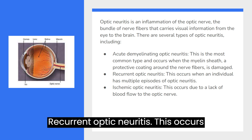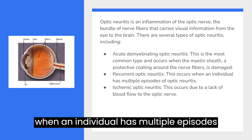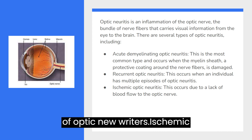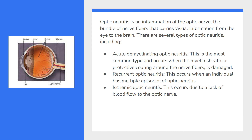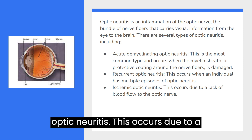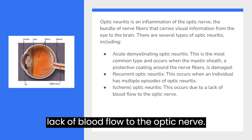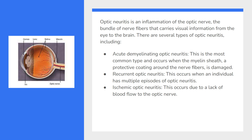Recurrent optic neuritis occurs when an individual has multiple episodes of optic neuritis. Ischemic optic neuritis occurs due to a lack of blood flow to the optic nerve.